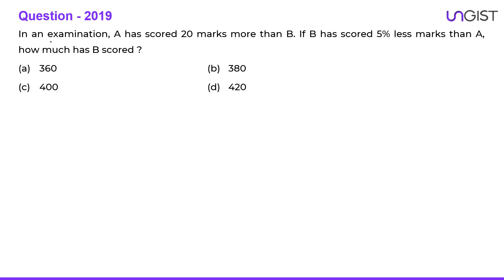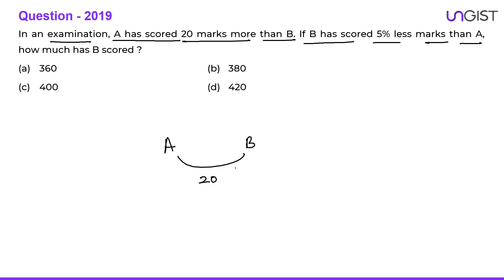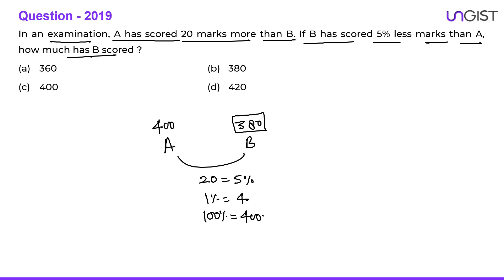Last question: In an examination, A has scored 20 marks more than B. B has scored 5 percent less marks than A. So 5 percent of A equals 20, meaning 1 percent of A equals 4, and 100 percent of A equals 400. Therefore A scored 400 marks and B scored 400 − 20 = 380 marks.